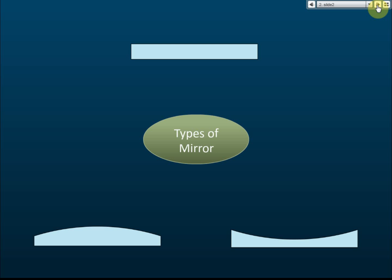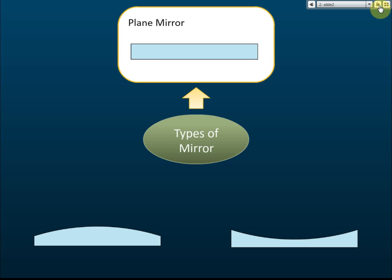Okay, reflections of light. Let's begin with the types of mirrors. There are three types. The first is called the plane mirror. The other two are curved mirrors — you can see that there's a curve here.